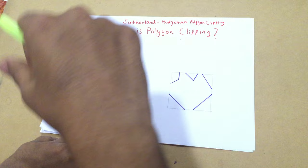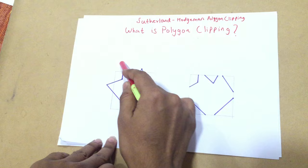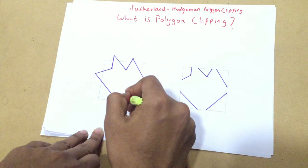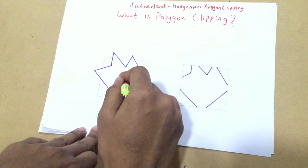Assuming that you know what line clipping is, a polygon is nothing but a collection of n number of lines. Therefore we might think that the line clipping algorithm can be used directly for polygon clipping. However, when a closed polygon, like shown in this figure, is clipped with the collection of lines, the original closed polygon becomes a more open polygon.